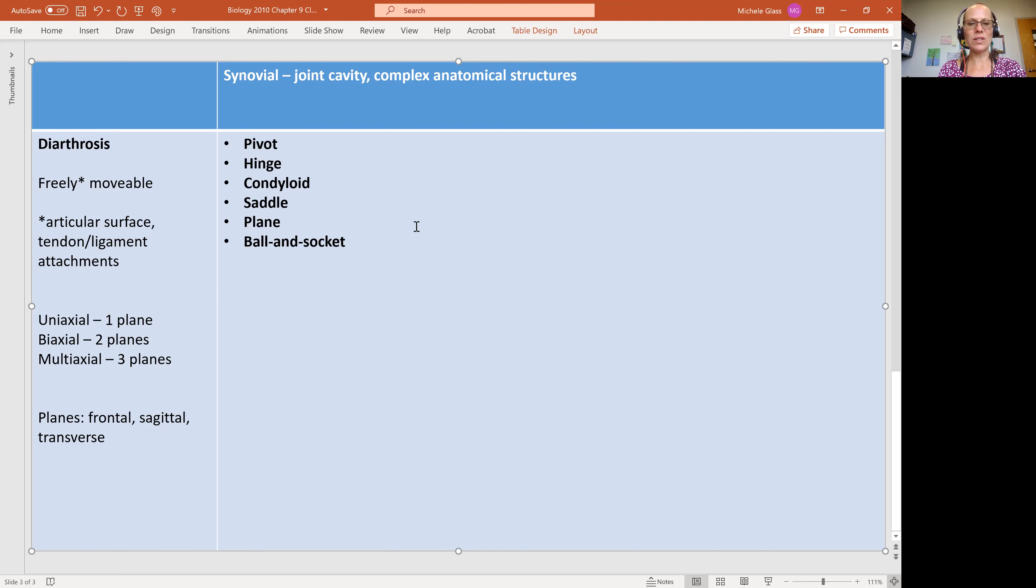So let's go through all six types. We are listing them out from the least amount of movement to the most amount of movement, and we'll describe them and then give some examples in the body.